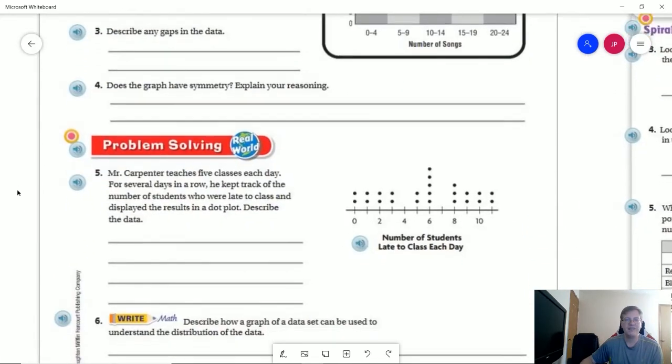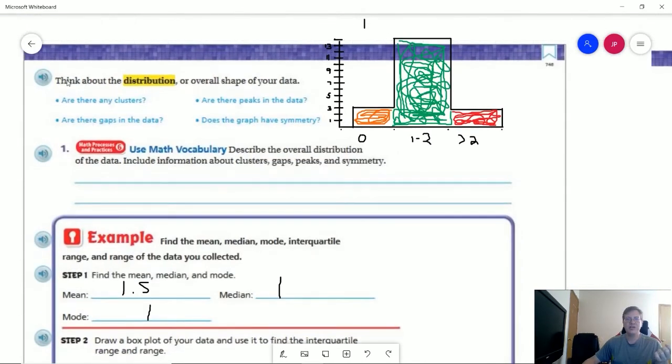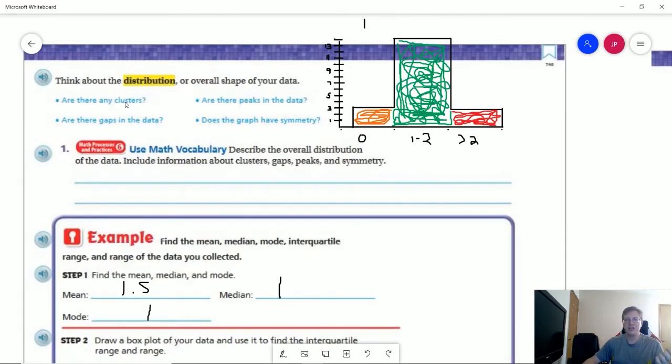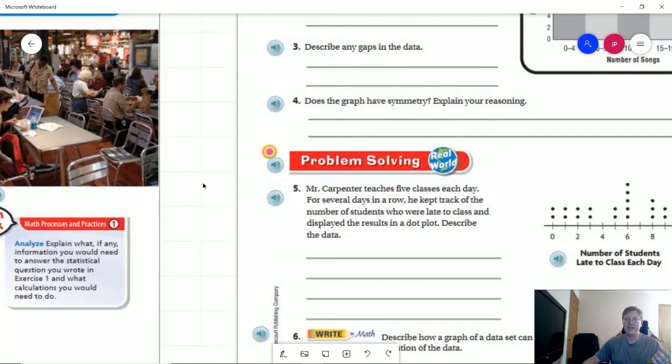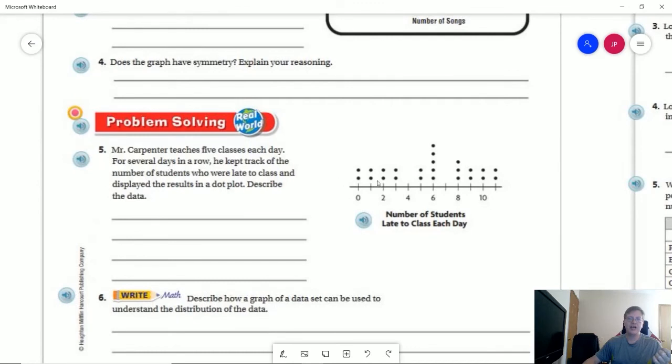Number five, describe the data. We want to talk about four different things. We are going to describe it based on having clusters, gaps, peaks, and symmetry, as well as we could say what the mode would be, which again is going to represent the peak. There might be a median, what the range or possible interquartile range could be for that.